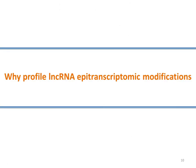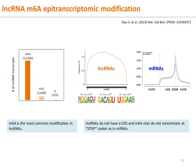Now let's move on to why we study and profile lncRNA epitranscriptomic modifications — an important layer of lncRNA regulation, along with expression. As in mRNA, m6A is the most abundant modification in lncRNAs. lncRNAs do not have protein-coding sequence, so the m6A site distribution appears evenly along the lncRNA and does not appear concentrated near the stop codon as in mRNAs.